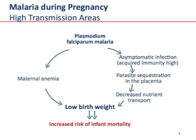In high transmission areas, falciparum malaria is associated with asymptomatic infection because there are high levels of acquired immunity. There is often parasite sequestration in the placenta.